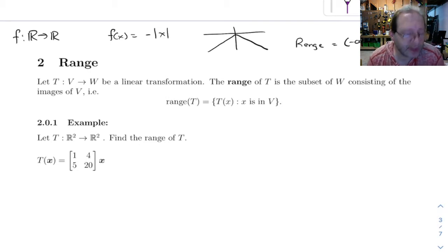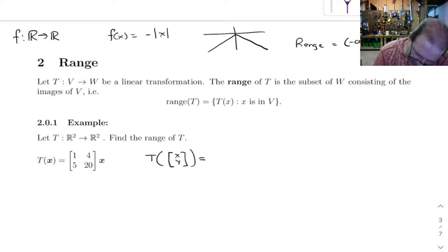So first up, let's just look at this. T maps R2 to R2, and it's defined by T of x is equal to this matrix times x. So let's play with this for a minute. Let's say you have T of, I'm going to call it xy here, write it out like that.